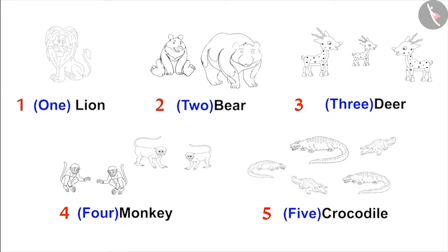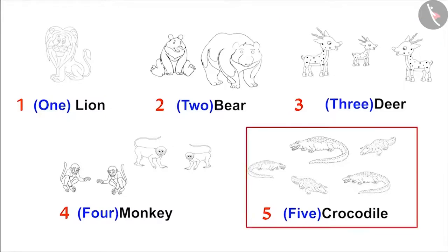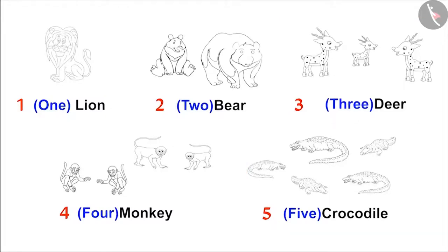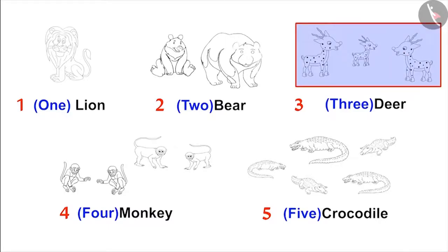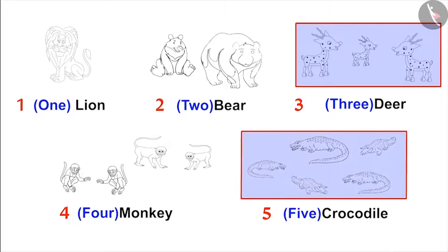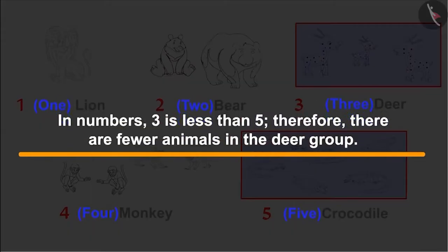Mom praises Pinky and asks: are there fewer animals in the deer group or in the crocodile group? Pinky answers there are three animals in the deer group and five in the crocodile group. Since three is less than five, there are fewer animals in the deer group.